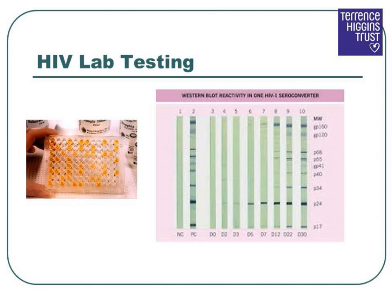The serum is then transferred into a well on a test plate — the kind of item you can see on the left-hand side of this picture. Various chemicals are then added along with HIV-specific antibodies. If HIV is present, a color change is observed. Unlike with the rapid test, this is then said to be a reactive result.